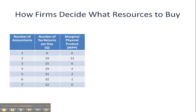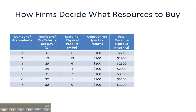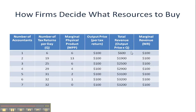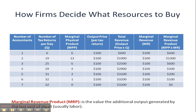The next thing we have to figure out is marginal revenue product. We are assuming a constant price for our tax return — a perfectly competitive environment — where we get a hundred dollars per tax return. Then we figure out total revenue, which is just price times quantity, P times Q. Once we get that, we can figure out marginal revenue, which is constant because we're assuming a perfectly competitive environment, so each additional unit of sale gives us exactly the same revenue as the last. Marginal revenue product is the value of the additional output generated by the last unit of input, usually labor.